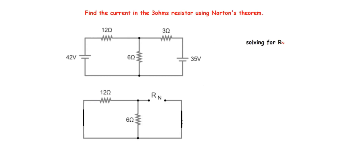So let's look at how we are going to apply these steps. With this question, you are told: find the current in the 3 ohms resistor using Norton's theorem. So let's look at how we are going to do that. First, we calculate Norton's resistance, and to do that you will have to take out the load resistor.